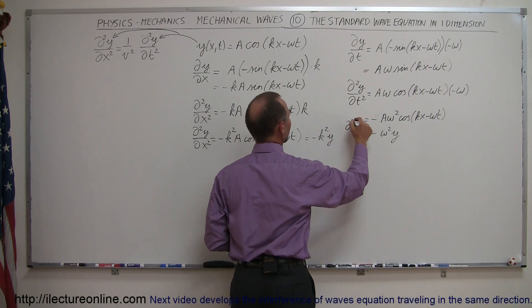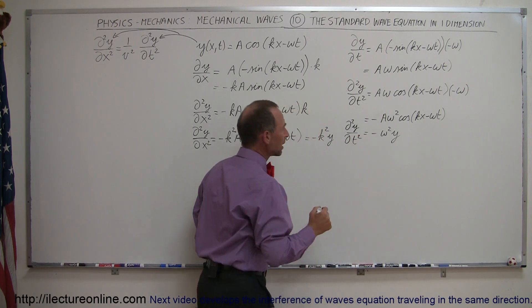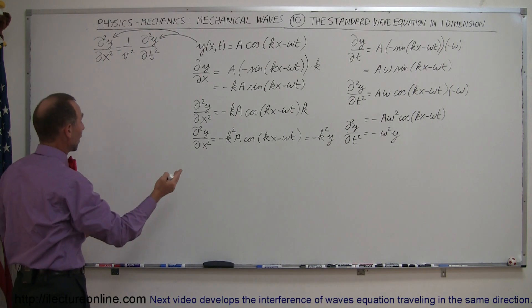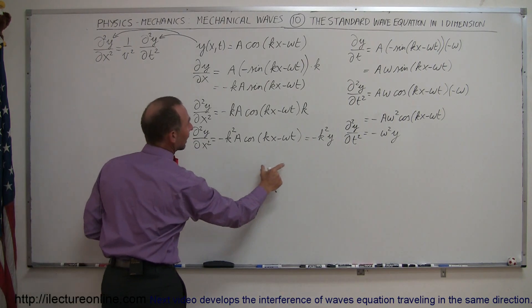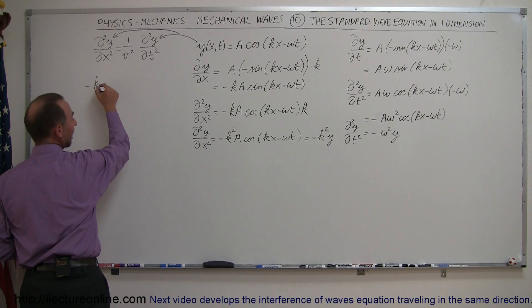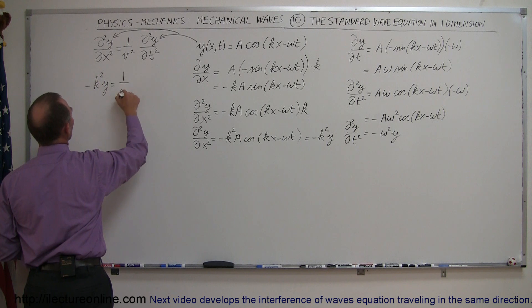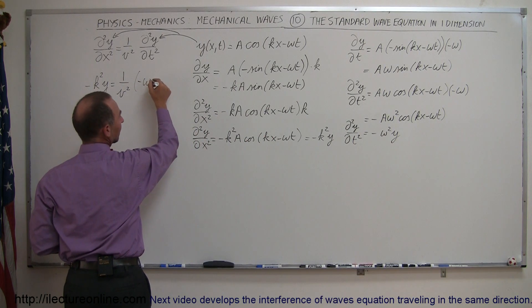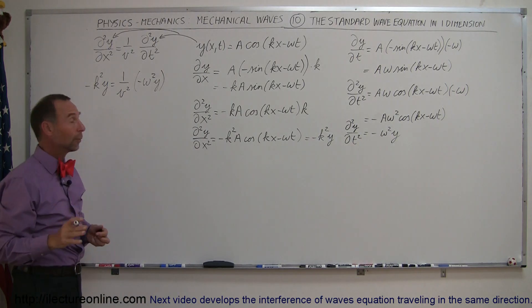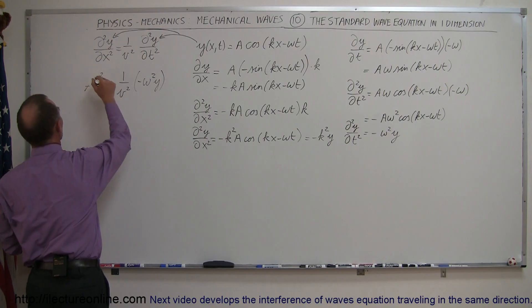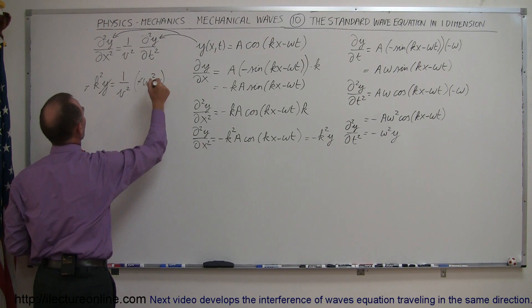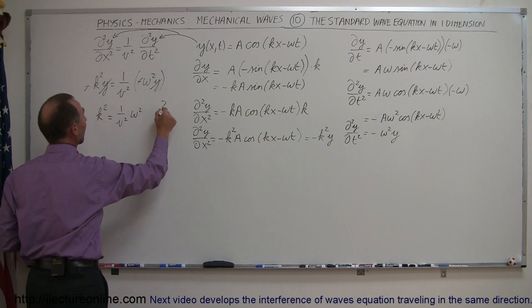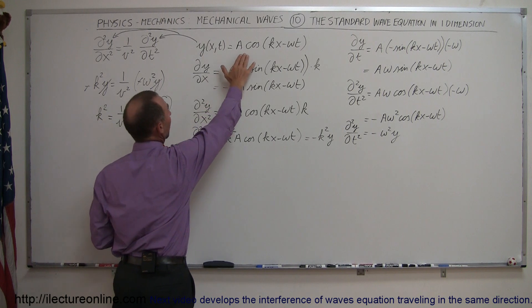Now let's plug in — that's the second derivative of y with respect to t. If we plug those things in here, do we get an equality, meaning does the left side equal the right side? So instead of the left side we plug in minus k squared y, and that equals 1 over v squared times minus omega squared y. Right away the minus cancels out, and we have y on both sides that cancels out. So we're left with k squared equals 1 over v squared times omega squared. The big question is: is that indeed true? If it's true, then this is indeed a proper wave equation.